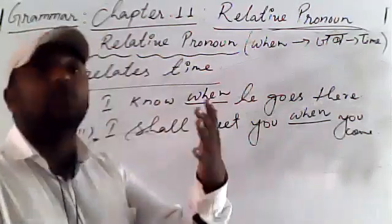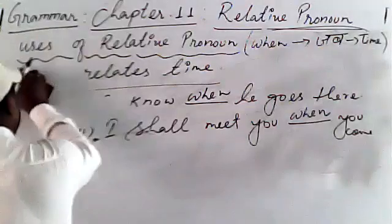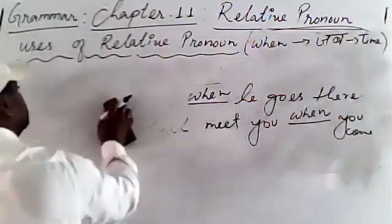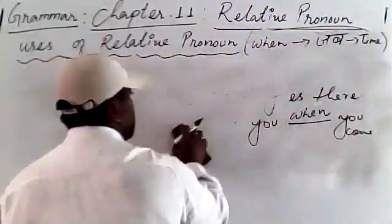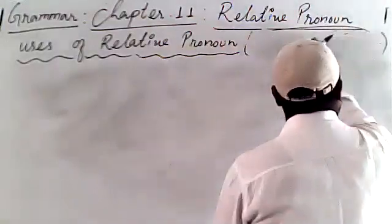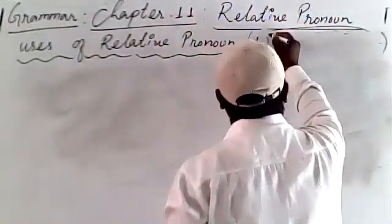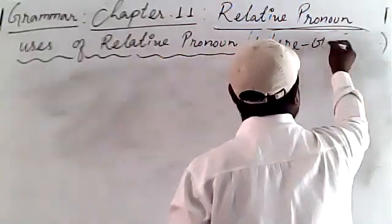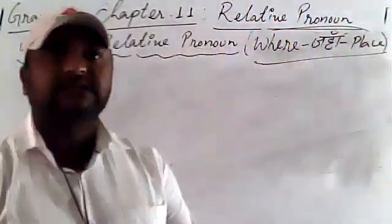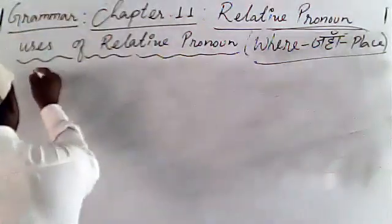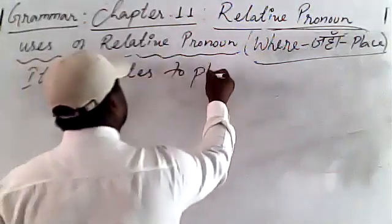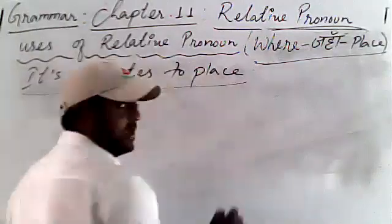Now let us move on to the next one — that is 'where'. The next use of relative pronoun is 'where'. Where relates to place — place ke liye use hota hai.